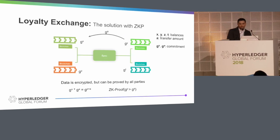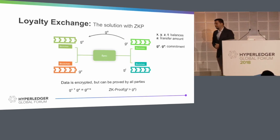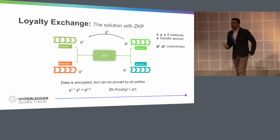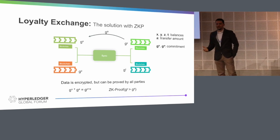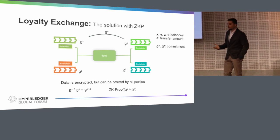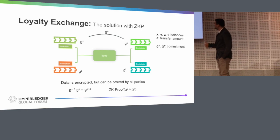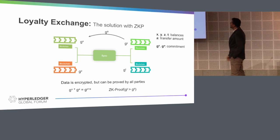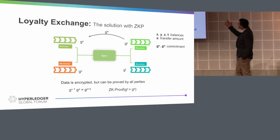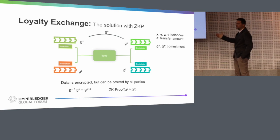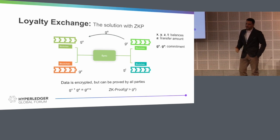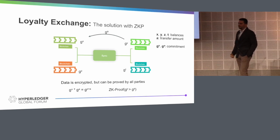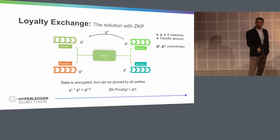So here comes our solution. Instead of representing the amounts X, Y, and Z directly, we represent them with our functions — in a simple case, g to the power of X. If a node makes a transfer of amount A, we still represent that with the function. Data is encrypted, and people can still verify the transactions using ZK proofs.